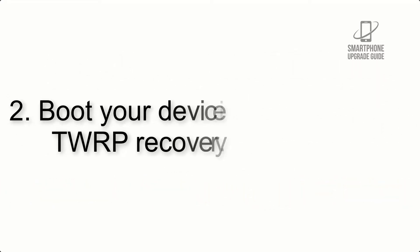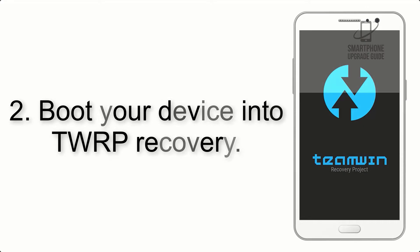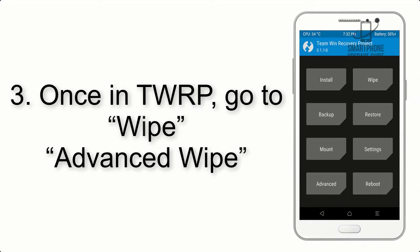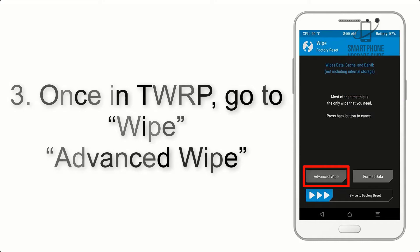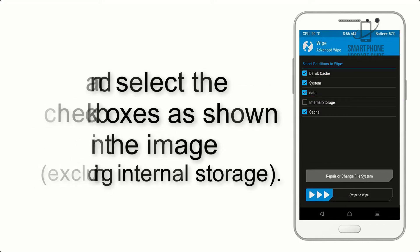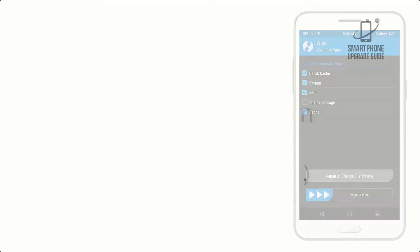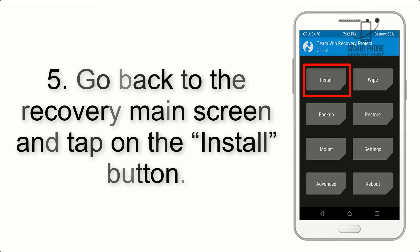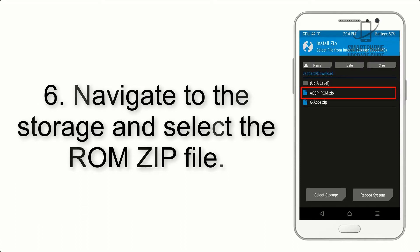Step 2: Boot your device into TWRP recovery. Once in TWRP, click on Wipe, then Advanced Wipe, and select the checkboxes as shown in the image, excluding internal storage. Step 4: Swipe the button to wipe the device. Step 5: Go back to the recovery main screen and tap on the Install button.